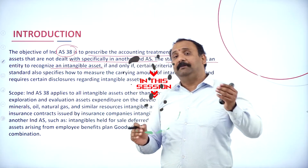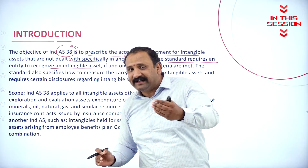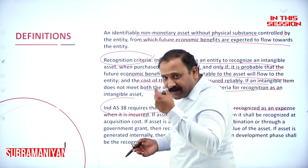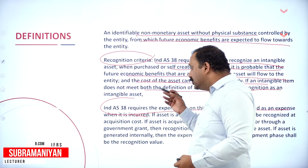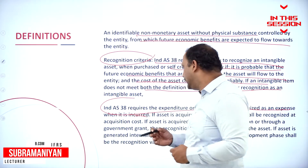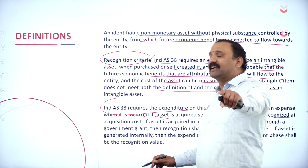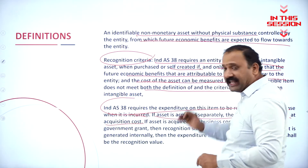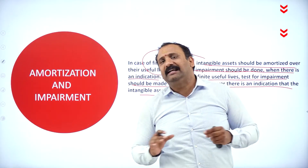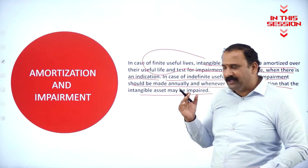Intangible assets might be something like goodwill, patents, or copyrights. When you are going to invent something and spend money on research and development, you need to understand the cost involved. If the asset is acquired separately, it shall be recognized at the acquisition cost only. The usefulness of that asset comes down automatically, and it has to be discarded with the value written off.